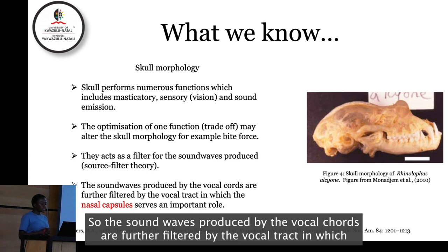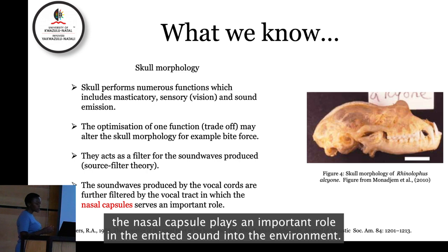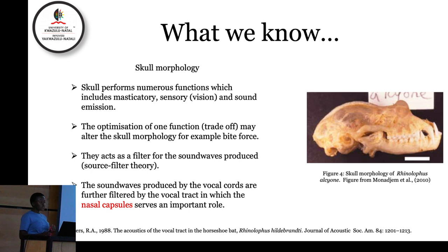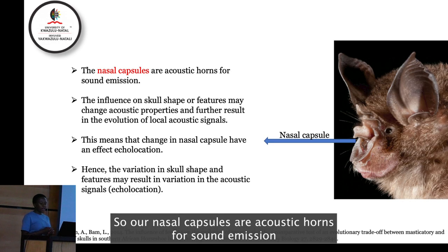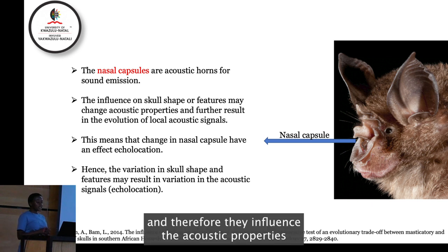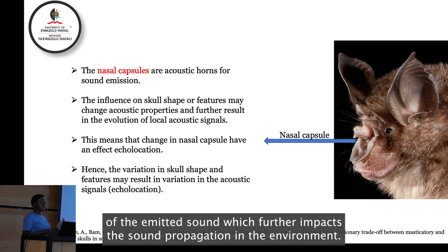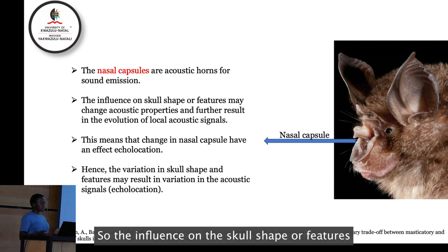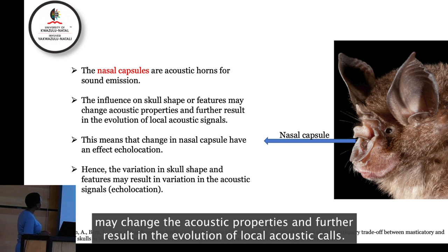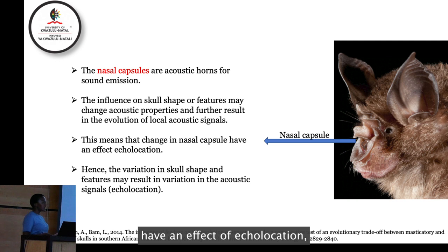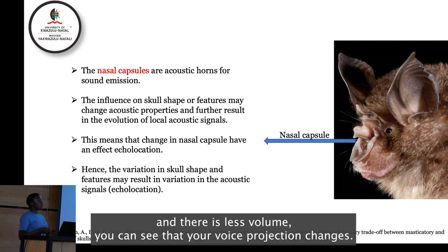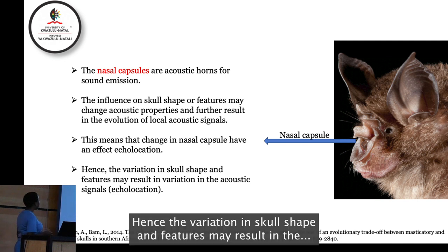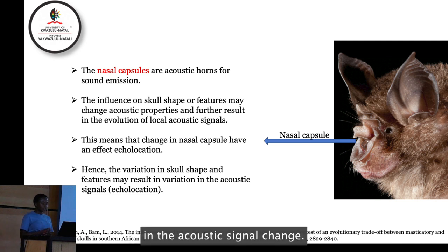The sound waves produced by the vocal cords are further filtered by the vocal tract, in which the nasal capsule plays an important role in emitting sound into the environment. We are now looking at the nasal capsule as our feature of interest in skull morphology. The nasal capsules act as acoustic horns for sound emission and therefore influence the acoustic properties of the emitted sound, impacting propagation in the environment. This is analogous to humans: when we have the flu and our nose is blocked, our voice projection changes.